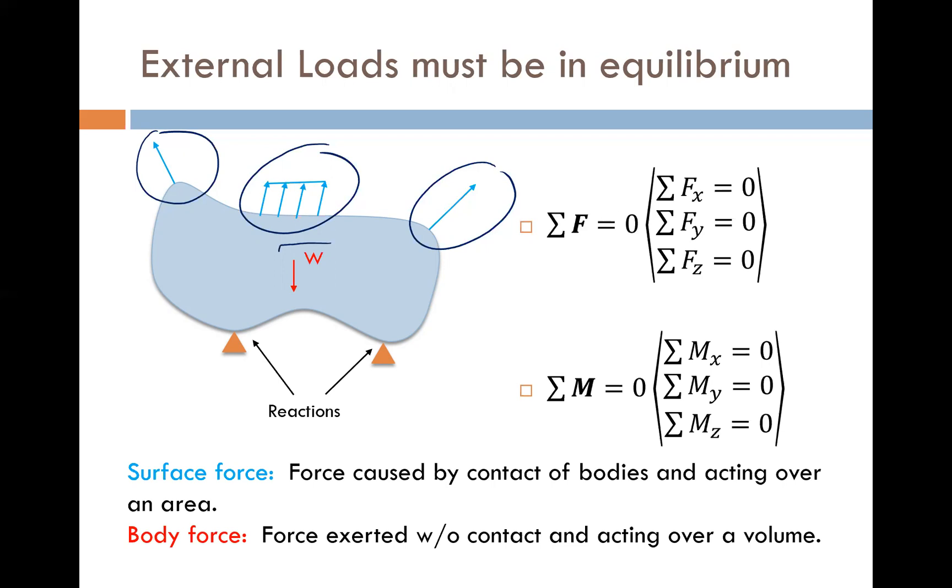And then in the middle I have a downward arrow W to indicate the weight of the object. That would be considered a body force. A body force is any force that acts over the volume of an object. So typically in this class it's gravity, but theoretically it could also be an electromagnetic force as well.